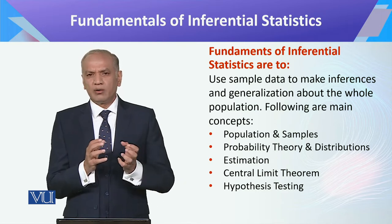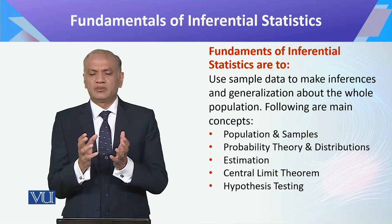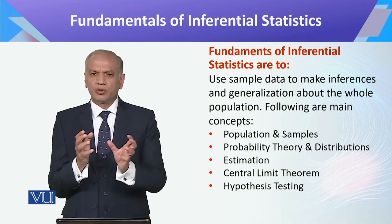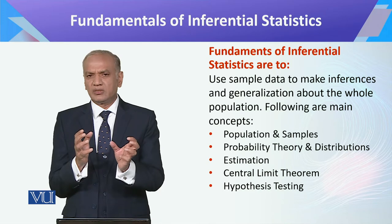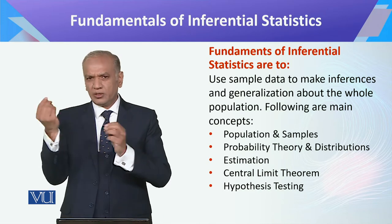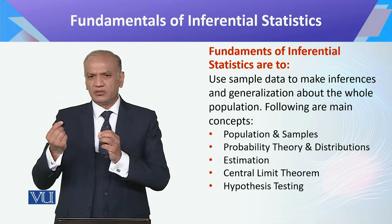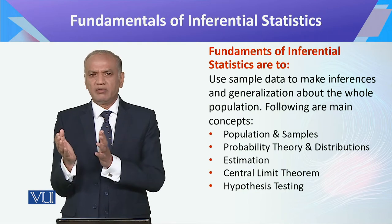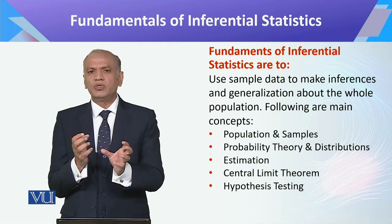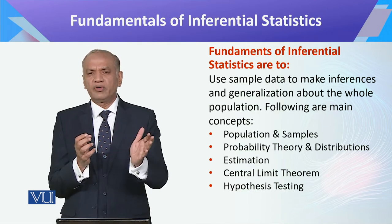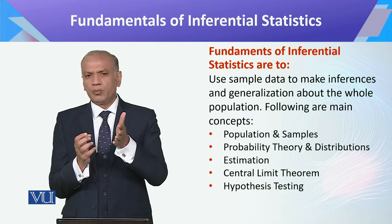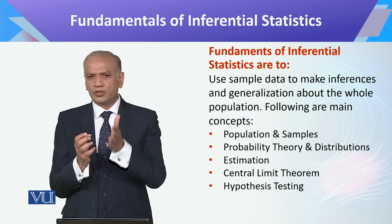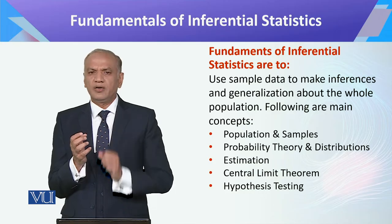We collect the data and we have certain assumptions. We set an assumption about the data which is called the null hypothesis, noted as H0. Then H1 is your alternative hypothesis, which you discover after applying your statistical model or statistical distribution on the data.